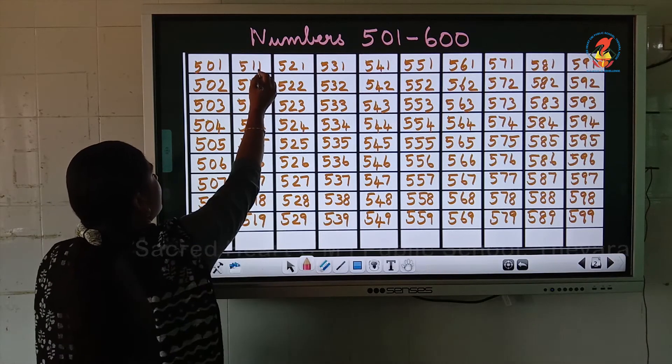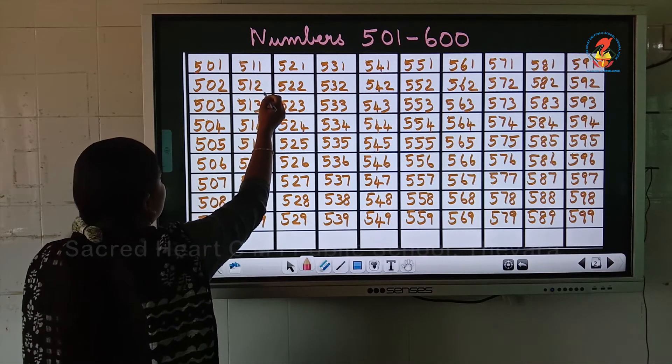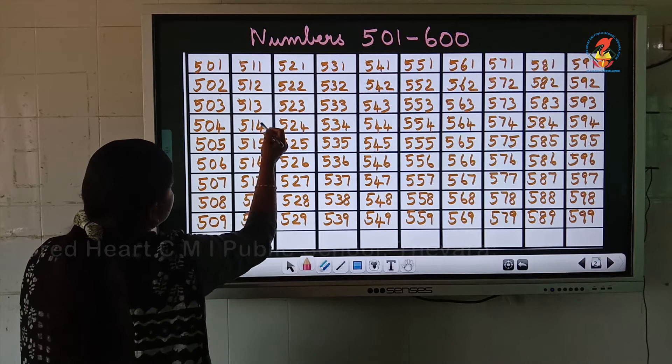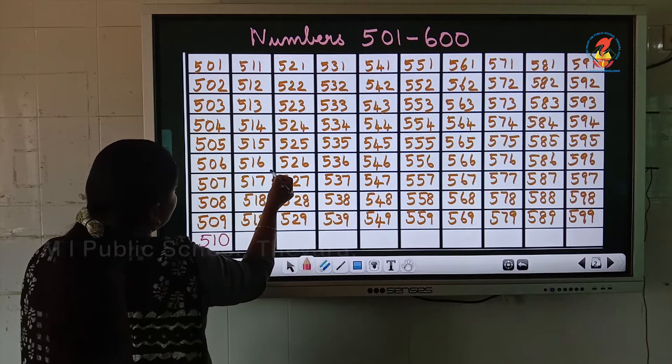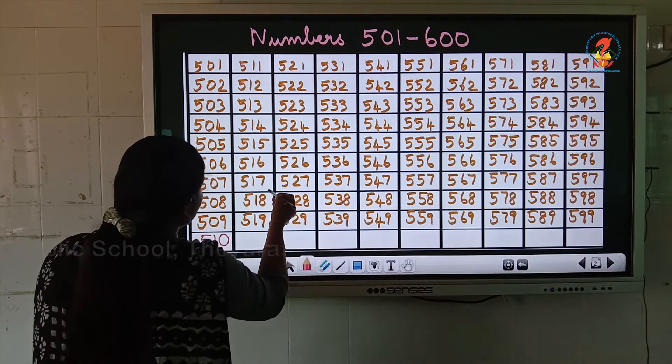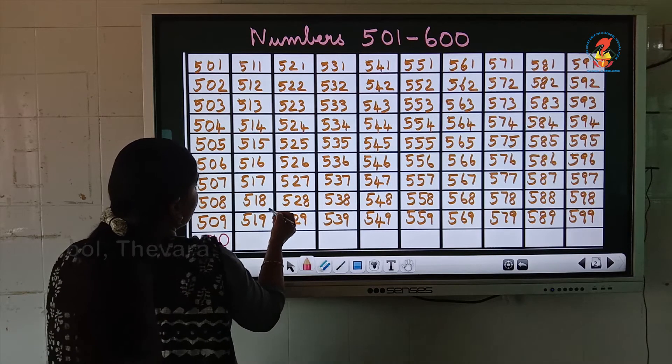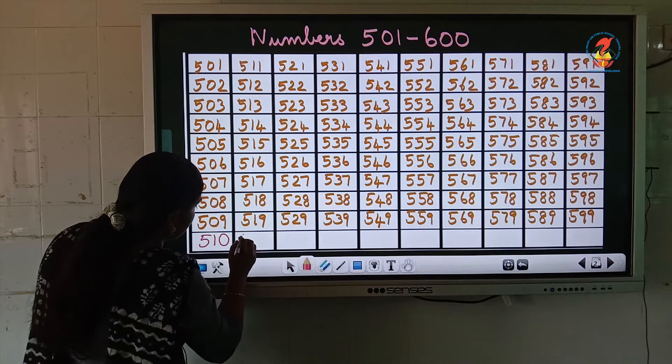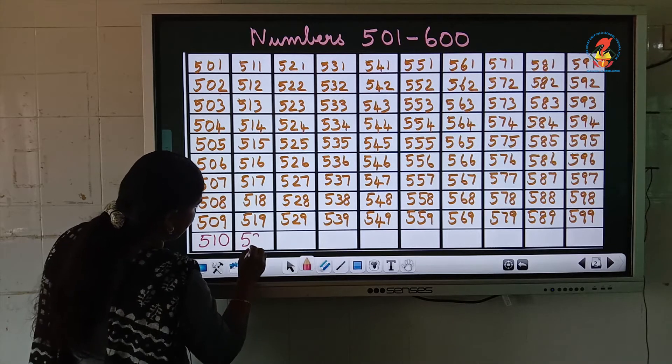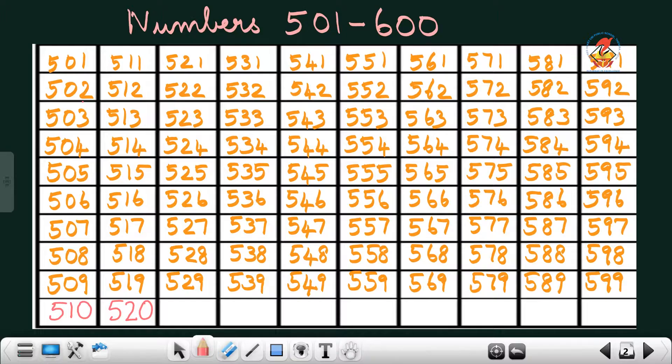Now, after 510, 511, 512, 513, 514, 515, 516, 517, 518, 519, the next number is 520.